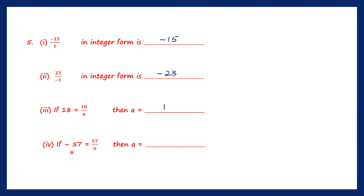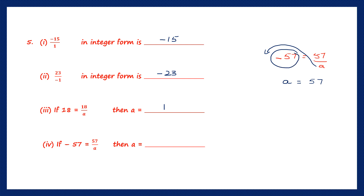Question 4 of Q5: if minus 57 is equal to 57 by A, then A equals what? Moving A to get it on top gives us A times 57 on the right. Moving minus 57 to the denominator: A equals 57 by minus 57. The signs are different — one is plus, one is minus — so the answer is negative. 57 divided by 57 is 1, so A is equal to minus 1.